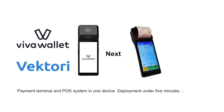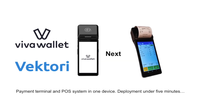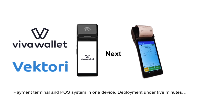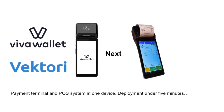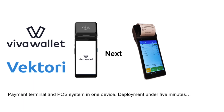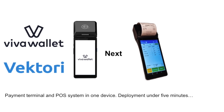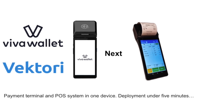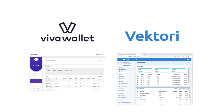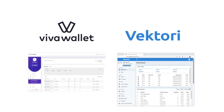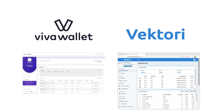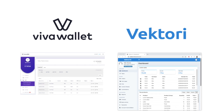In this video, we will show you how easy it is to deploy Viva Wallet Next Payment Terminal and Vektoripos Cash Register. It will only take about 5 minutes of your time. Before you can do this, you have to have a Viva Wallet Account and Vektoripos Cloud Access. I will put a link in the description on how to get those.